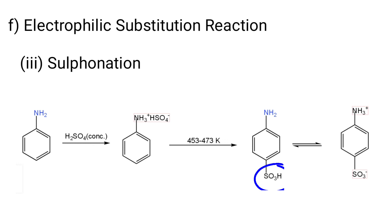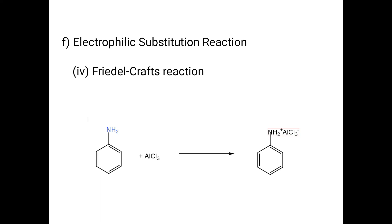The fourth electrophilic substitution reaction is the Friedel-Crafts reaction. In this reaction, aniline acts as a Lewis base and aluminium trichloride (AlCl3) acts as a Lewis acid. Due to salt formation between aniline and AlCl3, the nitrogen of aniline acquires a positive charge and thus acts as a strong deactivating group. Hence, Friedel-Crafts reaction does not occur in the case of aniline because a salt is formed with the Lewis acid catalyst AlCl3.